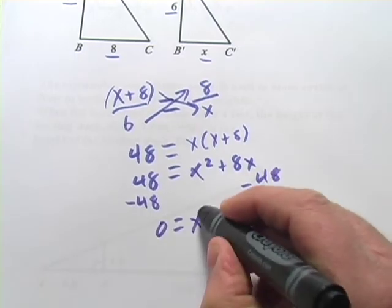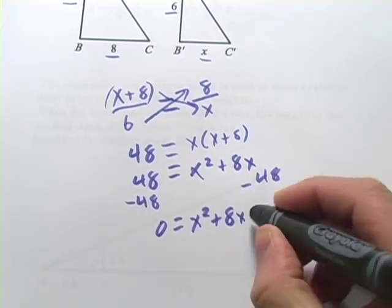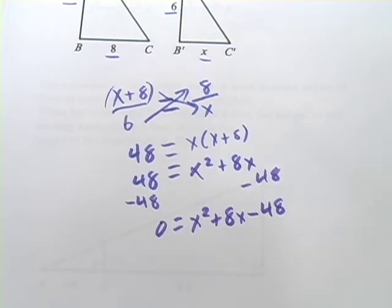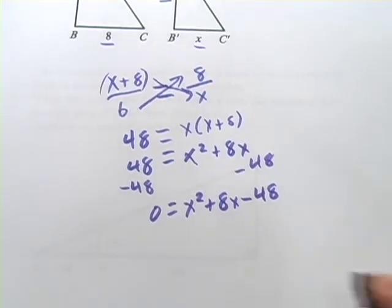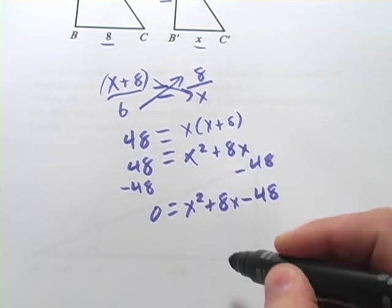And we get 0 equals X squared plus 8X minus 48. Now I think we can factor this one. Remember, with a quadratic, there'll be two solutions.